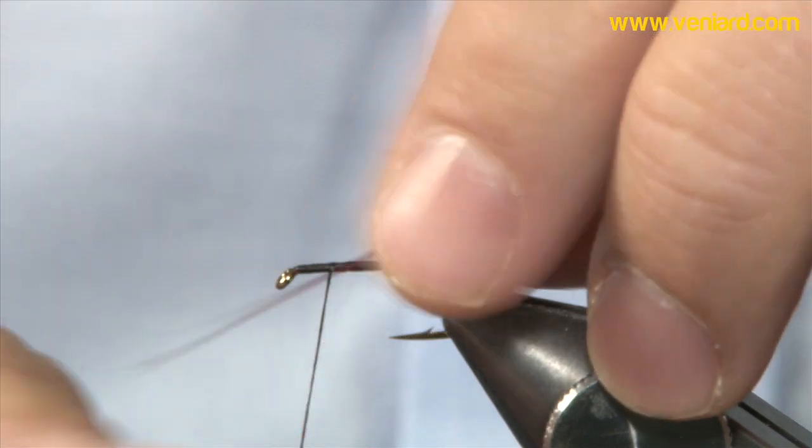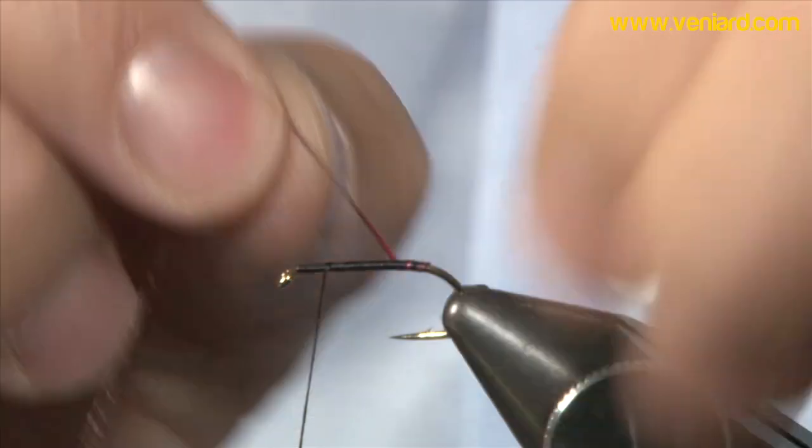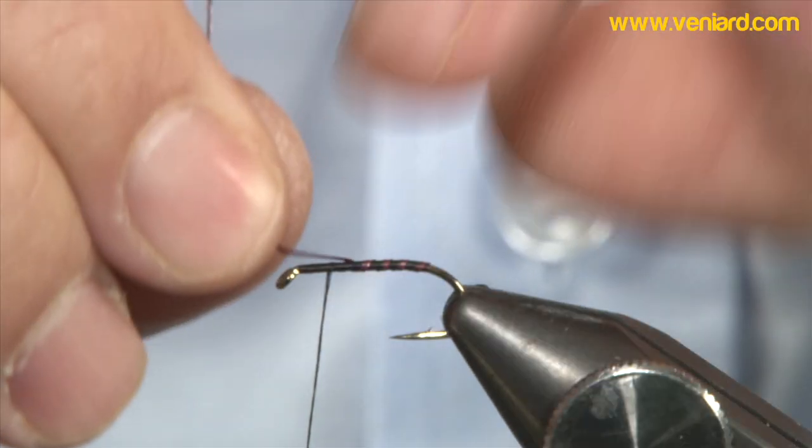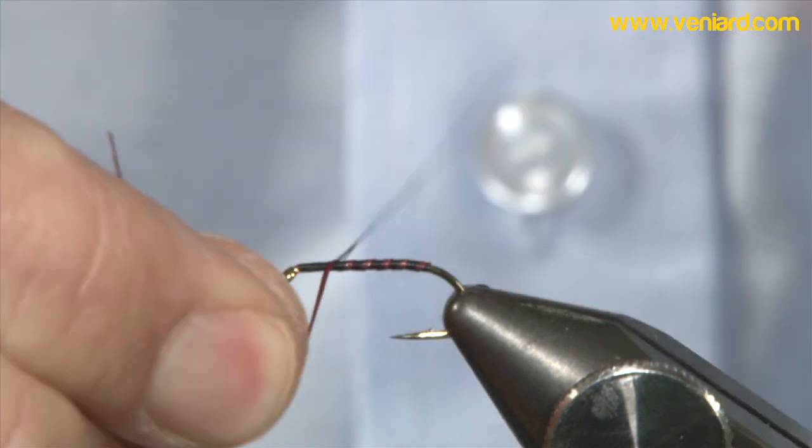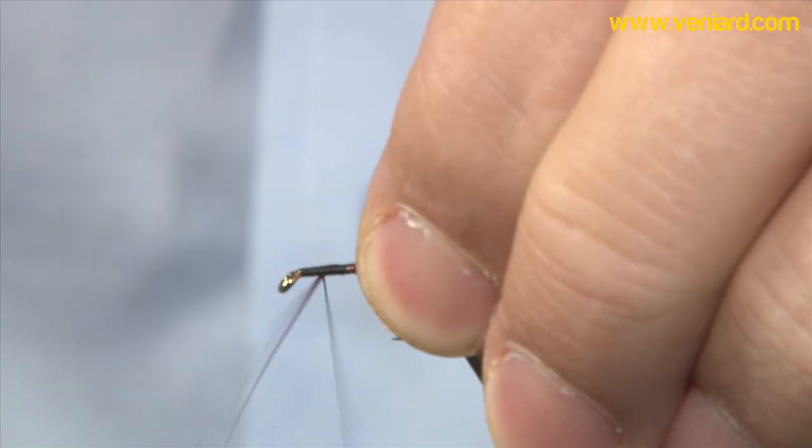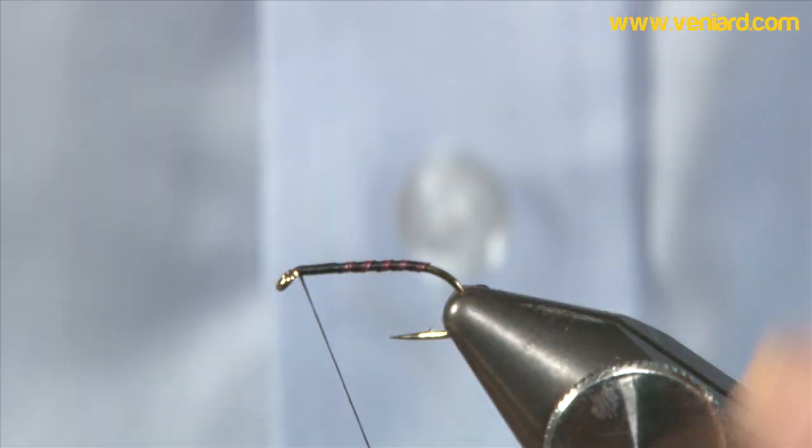Come up the hook shank, creating that rib effect as you go. Stopping at the thorax. Should just snip off like that.